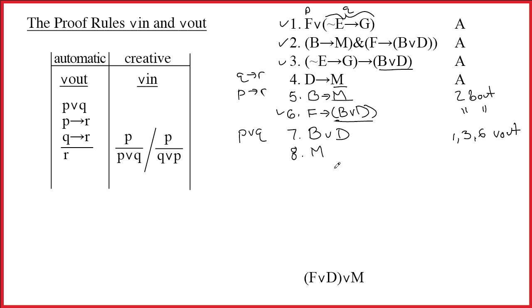Let me write m. And the justification for that is going to be what? 4, 5, 7, and the name of the rule, wedge out. Ah, yes, great excitement.